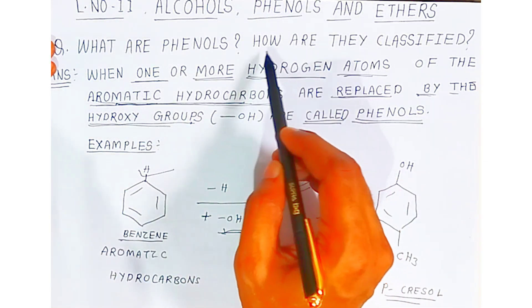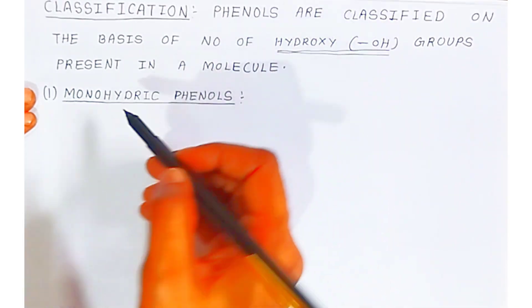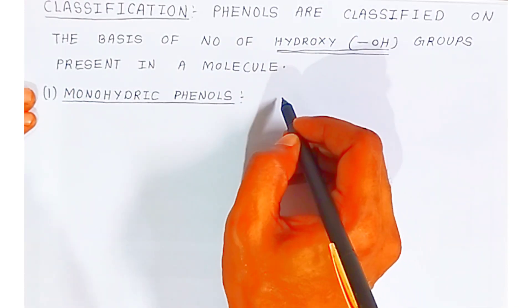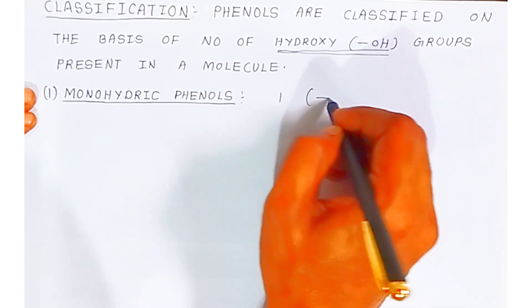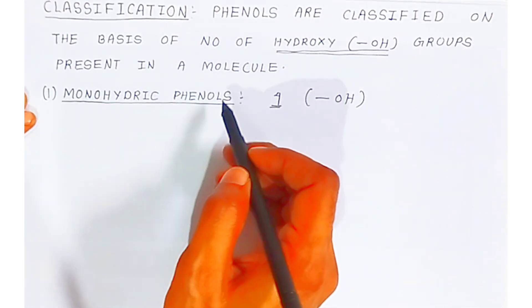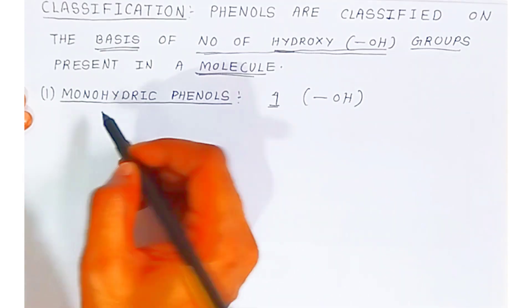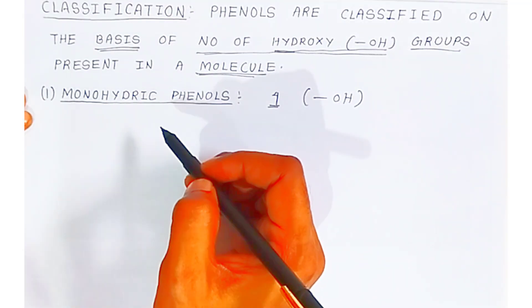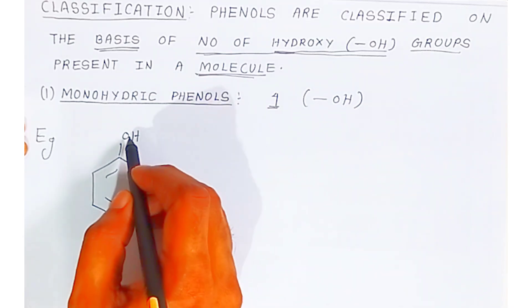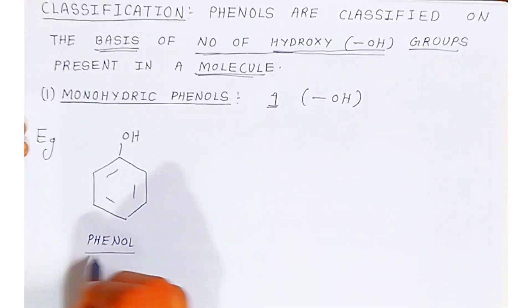Now, the next part of the question is: how are they classified? So, depending upon the number of hydroxyl groups present in the phenols, they are classified into monohydric, dihydric, and polyhydric phenols. If the phenol contains one hydroxyl group, we call it as monohydric phenols. This aromatic compound containing only one hydroxyl group — we call it as phenol. A very simple example of monohydric phenol is phenol itself.